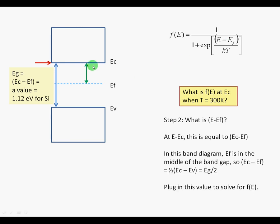In this case, it's the difference between EC and EF. Because E sub F is in the middle of the band gap, this quantity is equal to half of the band gap, or one half of EC minus EV.